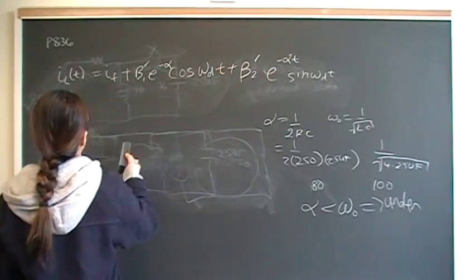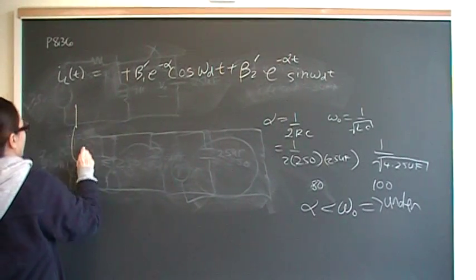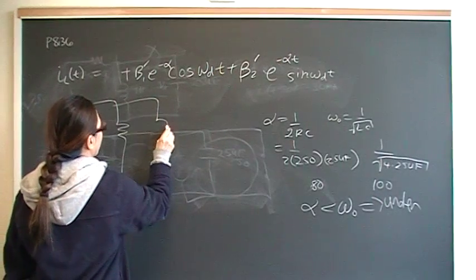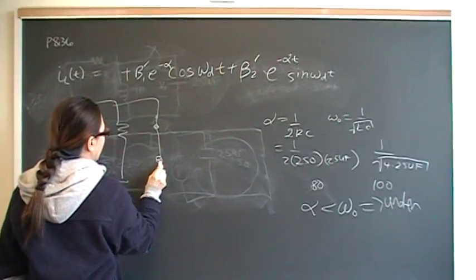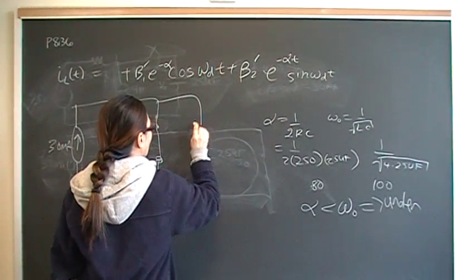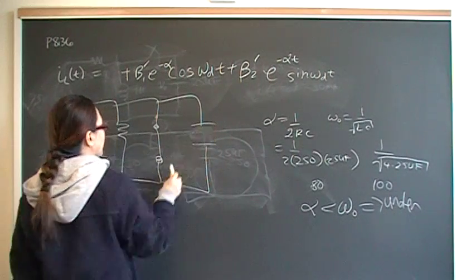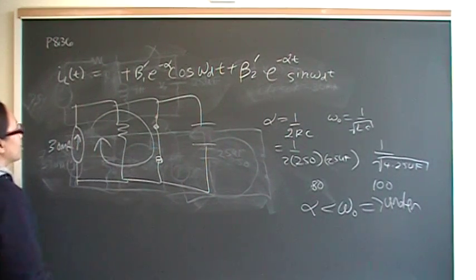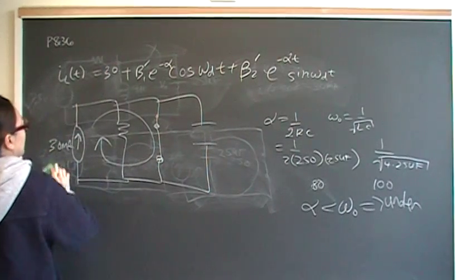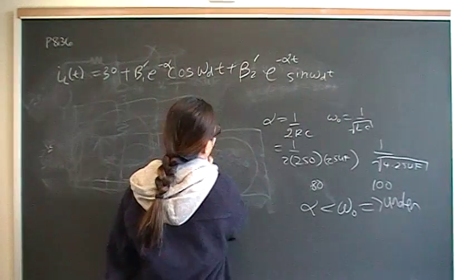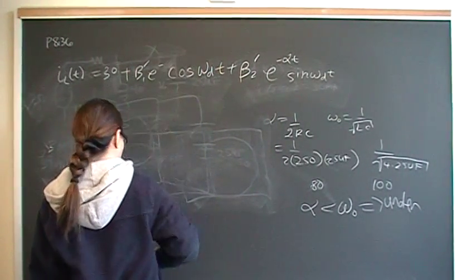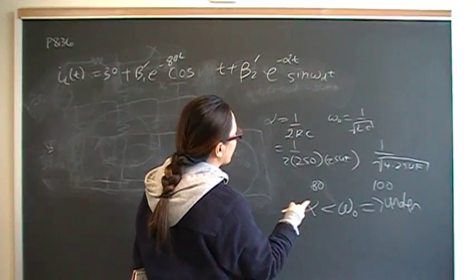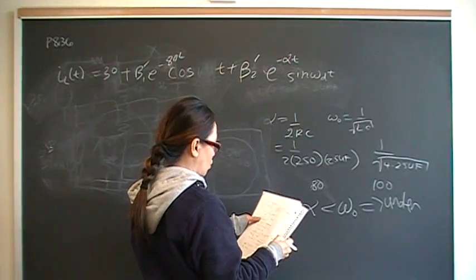What do we know? We know I final. 30 milliamps. This is an ideal current source. In the long run, the capacitor is an open, the inductor is a short, and we have an ideal current source. The I final is just going to be that same current, 30. What else do we know? We know that alpha is 80, so this is going to be e raised to the 80. This, we know omega naught is 100 radians per second.